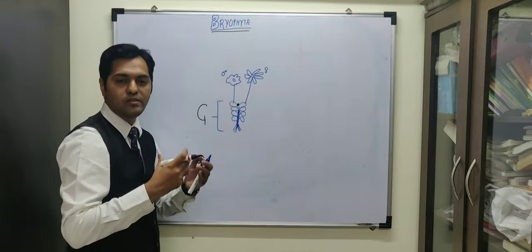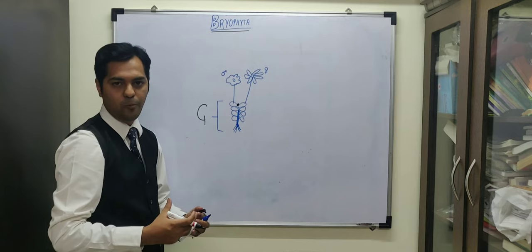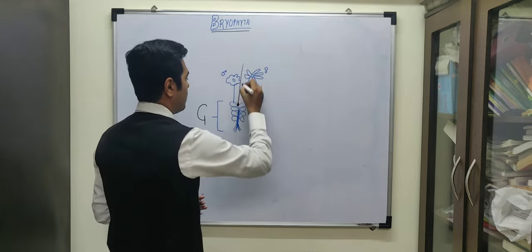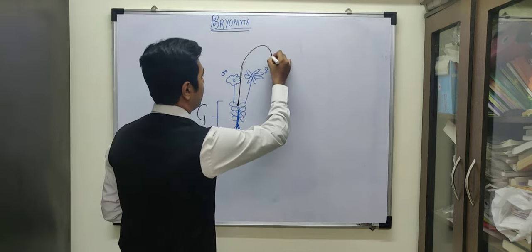That zygote develops into the embryo and produces the sporophyte which consists of foot-like structure, seta and capsule.